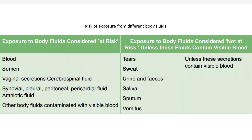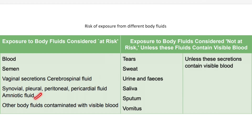There are some body fluids to which the risk is very high. For example: blood, semen, vaginal secretions, CSF, and other body fluids like synovial fluid, pleural, peritoneal, pericardial fluid exposure, and very importantly during pregnancy and delivery, amniotic fluid exposure. Any other body fluid which is visibly contaminated with blood also carries high risk.